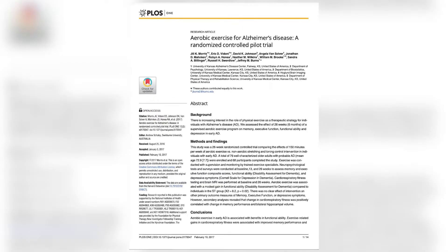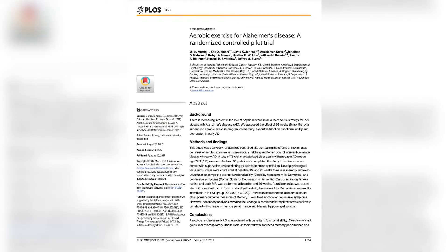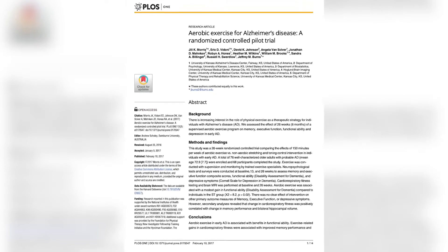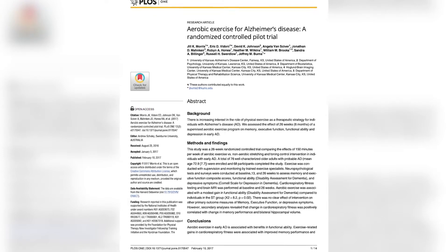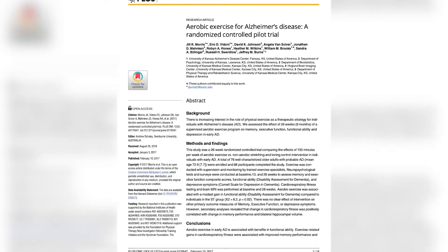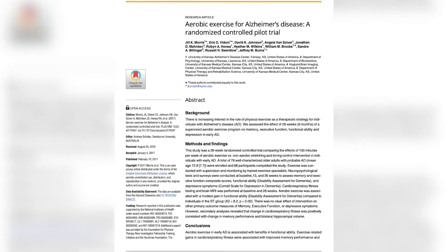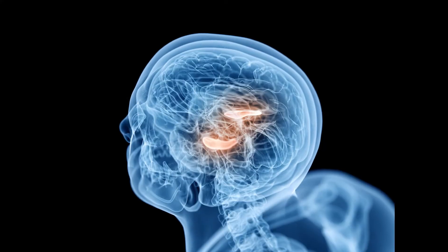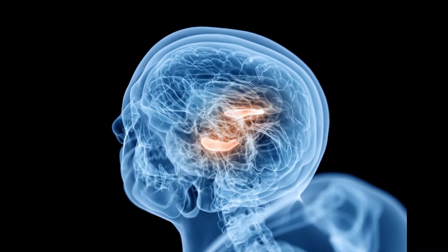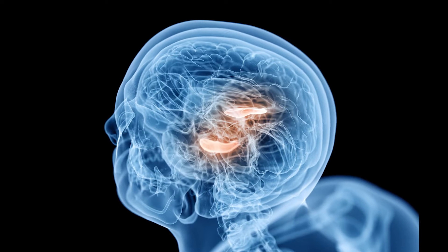In 2016, a randomized controlled trial — one of the most rigorous forms of research — compared people with Alzheimer's assigned to an aerobic exercise intervention against a similar group assigned to a non-aerobic toning and stretching regimen. Just six months later, the aerobic group showed on brain imaging reduced shrinkage in the hippocampus, a part of the brain crucial for memory. They not only showed improvement in brain cells but also improved memory functions on testing.